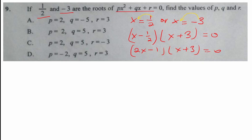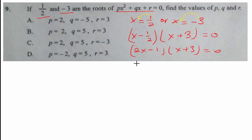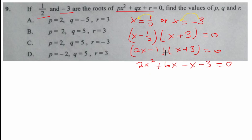Now we use the distributive property to expand. 2x multiplies x to give 2x squared. 2x multiplies 3 to give 6x. Negative 1 multiplies x to give negative x. Negative 1 multiplies 3 to give negative 3, and this equals 0. For those having problems with expansion, I recently made a video on expanding binomials — the link will be at the top or in the description. Simplifying: 2x squared, then 6x minus x gives 5x, minus 3 equals 0.